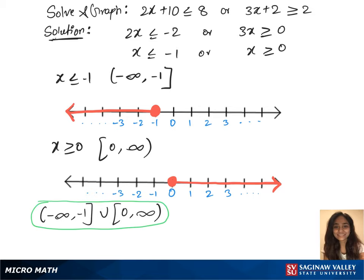We'll plot this on the graph, which is 0 to infinity plus -1 to negative infinity. So this is our final graph.